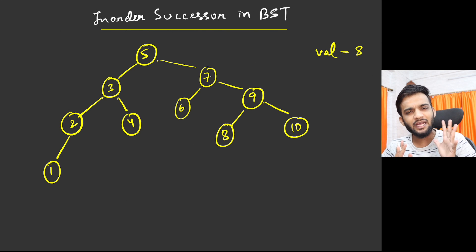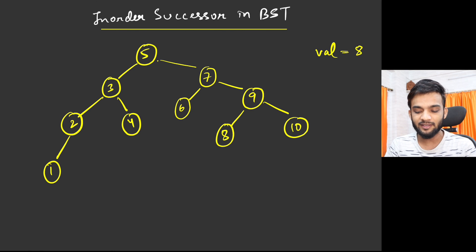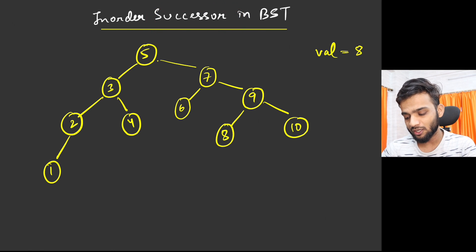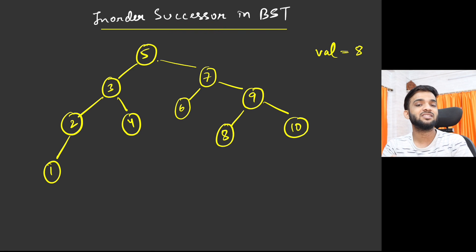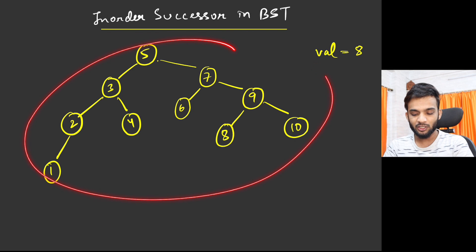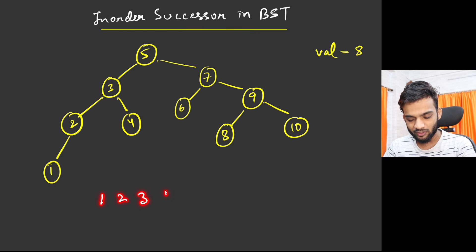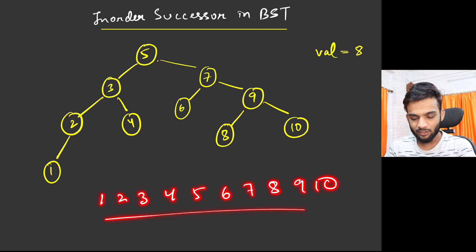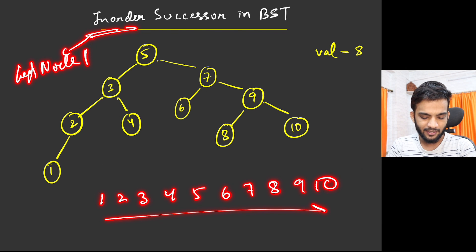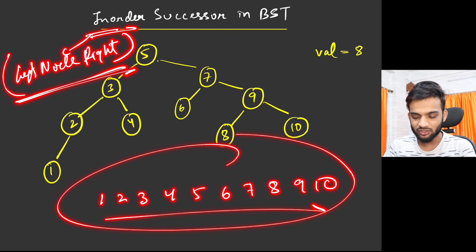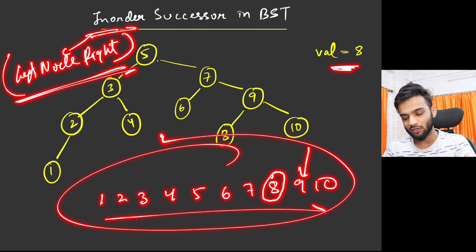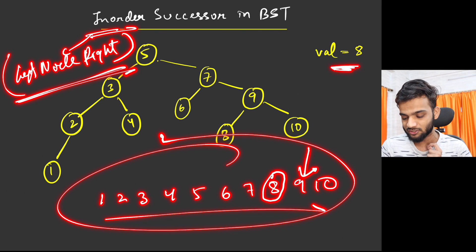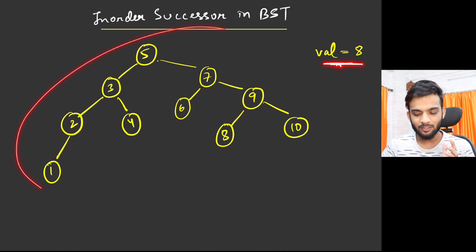If you want to know BSTs in more depth, check out my playlist. The question asks you to find the in-order successor. You're given the value 8, and asked to give the in-order successor. If you write the in-order of this binary search tree you get 1, 2, 3, 4, 5, 6, 7, 8, 9, 10. In-order is left, node, then right. So 8 is here, and the in-order successor is 9.